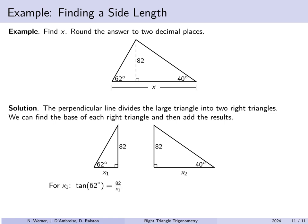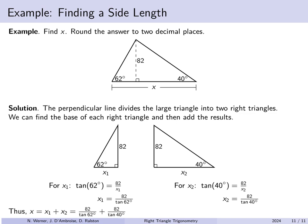Since we know the altitude and want the other non-hypotenuse side, tangent is the most useful function because it does not involve the hypotenuse. The tangent of 62 degrees equals opposite over adjacent on the left triangle, and the tangent of 40 degrees equals opposite over adjacent on the right. Solving gives x1 equals 82 divided by tangent of 62 degrees, and x2 equals 82 divided by tangent of 40 degrees. Therefore x equals x1 plus x2, which approximates to 141.32 units.